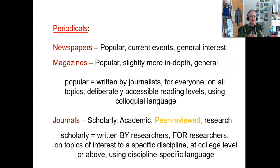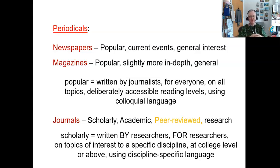Popular periodicals are newspapers and magazines. They're written by journalists who are not necessarily experts in those fields, intended to cover any topic of interest, and targeted for general readers. So they use regular language and relatively short stories that do a lot of explaining. Scholarly journal articles, on the other hand, are written by researchers in the field for researchers in the field. They assume you have background knowledge about the topic, and will talk about what's new without explaining what's already there — they think you already know it, or you wouldn't be reading a scholarly journal.